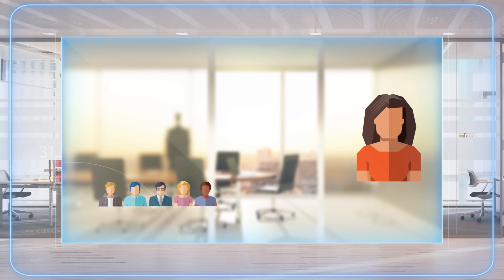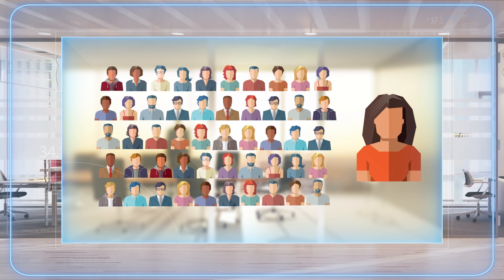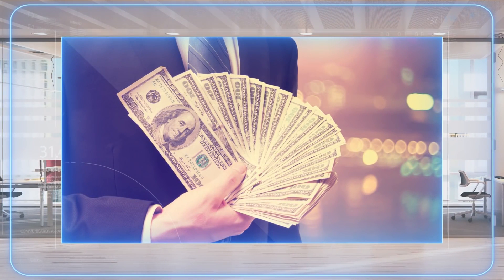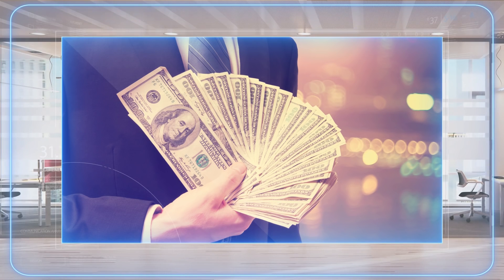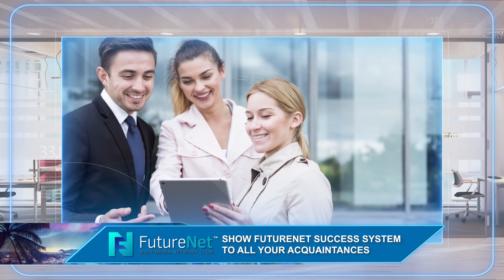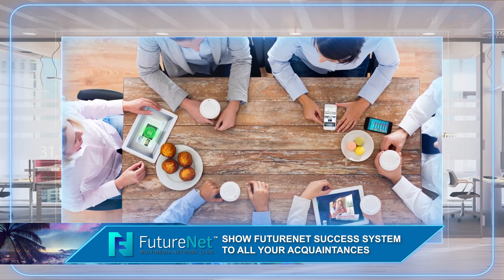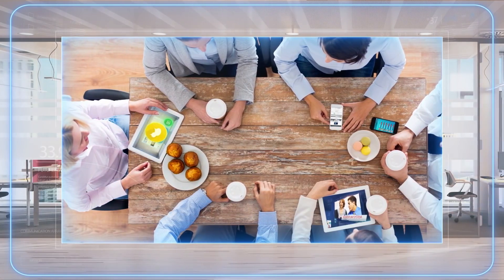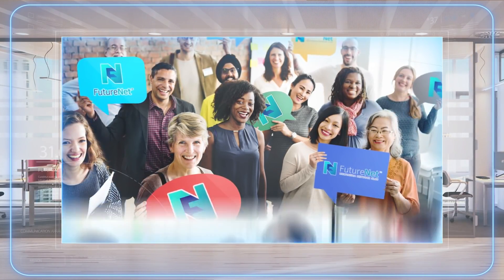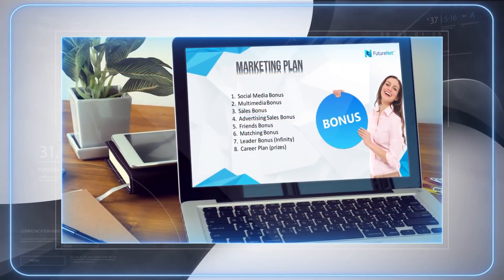Imagine that you have 5, 10, 20, 30, or 50 personal business partners. Matching bonus is an unlimited source of additional income. Certainly, it will be the biggest part of your proceeds. All you have to do is to show FutureNet's success system and video presentation to each of your acquaintances. Advertise and make this presentation available online and offline everywhere you can. This was a short presentation of FutureNet's marketing plan.